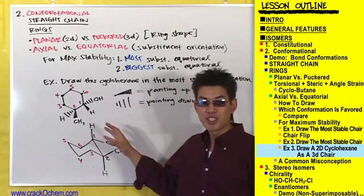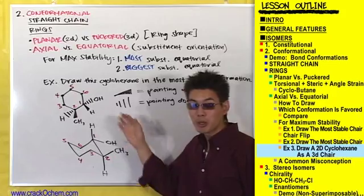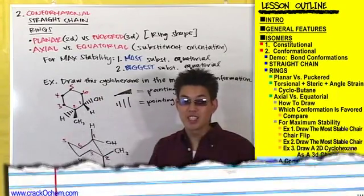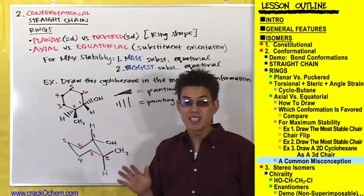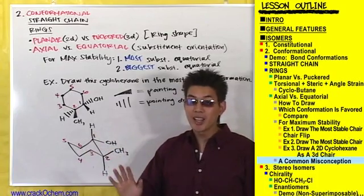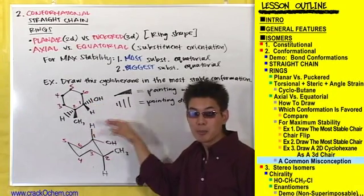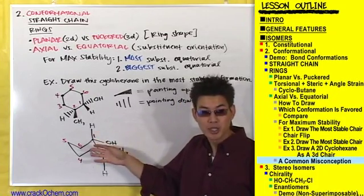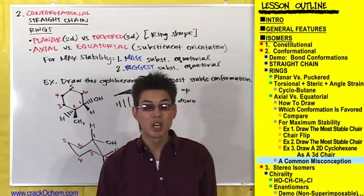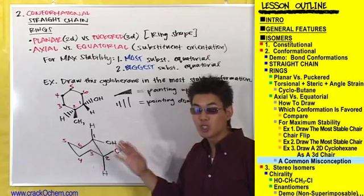That took a while to show, but when it comes down to doing a problem like this it will only take a couple minutes tops. The take-home message: do not pay attention to whether a substituent is axial or equatorial — only pay attention to whether a substituent is pointing up or pointing down. If it's pointing up in the planar conformation, it better be pointing up in the chair also, and vice versa. The only time you care about axial or equatorial is when determining the most stable conformation. So draw your chair first with substituents pointing up or down, then worry about whether it's in the most stable form.